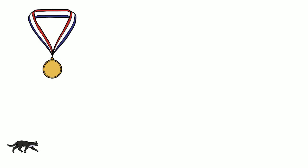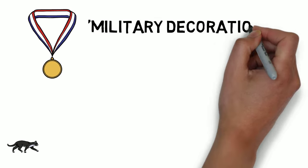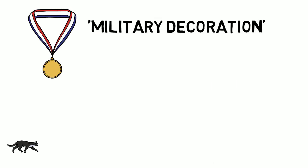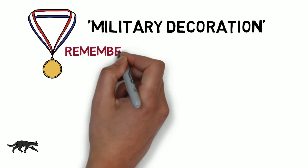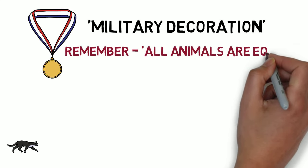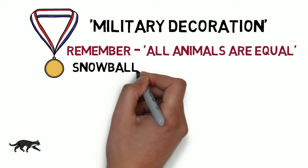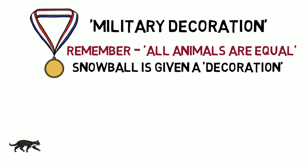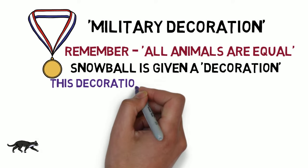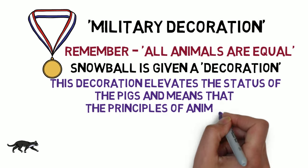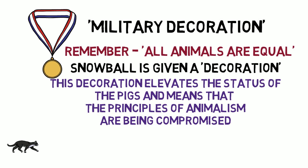Looking at the military decorations: remember at the start of the novel we learned that all animals are equal. However, Snowball is given a military decoration — an award for excellent service, usually coming with a medal, which many countries' armies issue. When it comes to Animal Farm, we need to think carefully about the message being given here. Are all animals equal if some are being given special attention? We know that many animals fought bravely, so why is Snowball decorated when others are not? The principles of animalism are being compromised here.